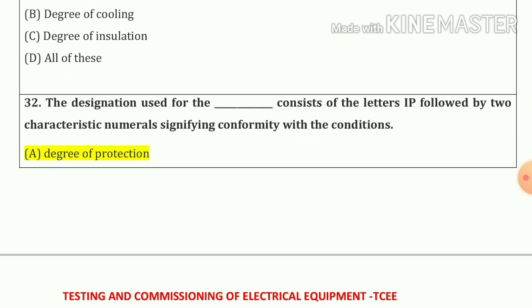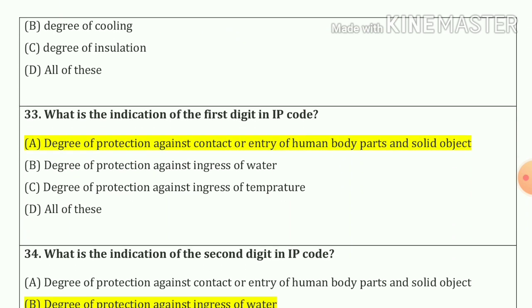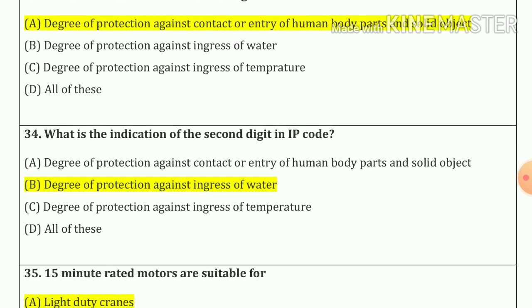Question number thirty-three: What is the indication of the first digit in IP code? So our answer is option A.